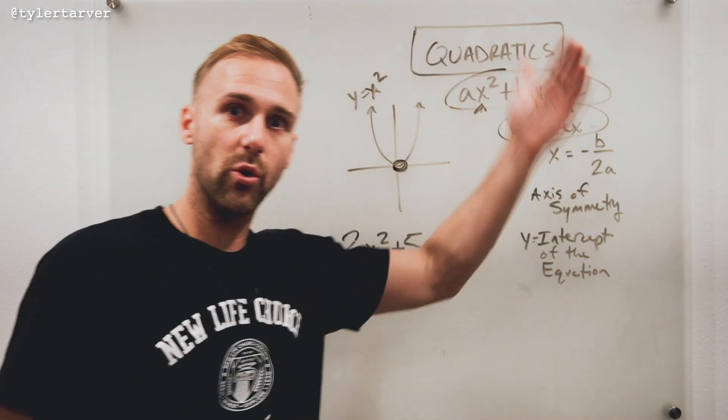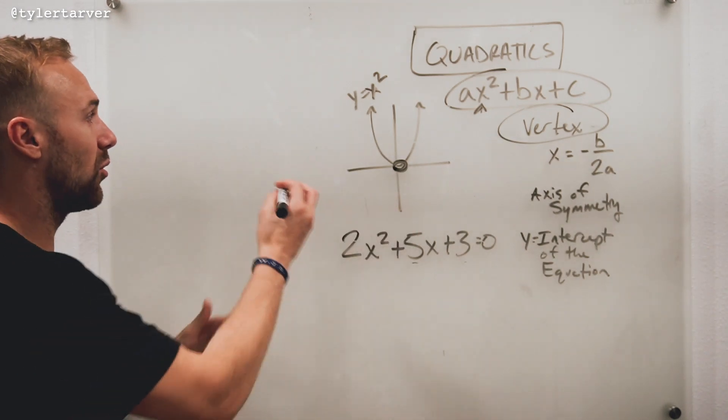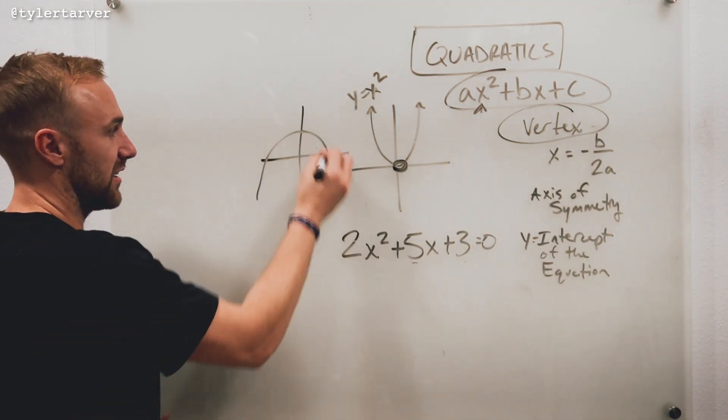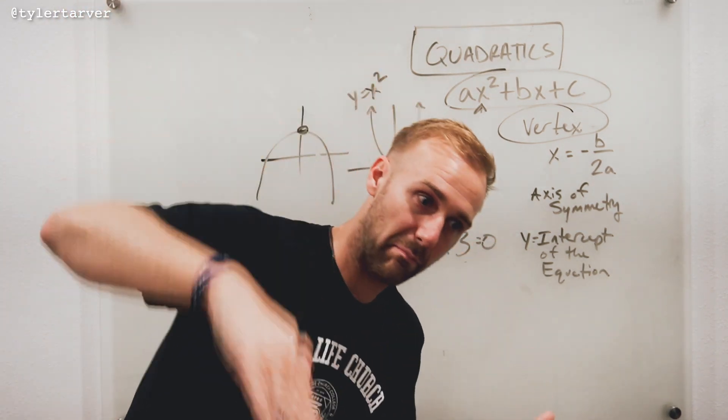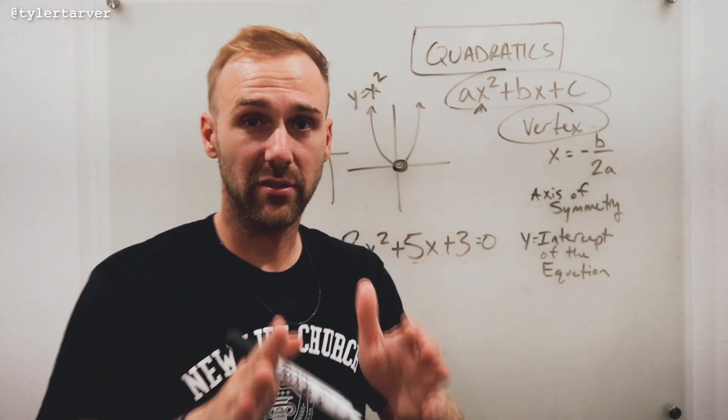That is where the lowest part of the quadratic is. Or if it's like this, then it's the highest part. Okay? Your vertex is like the tip of the mountain or like the bottom of the valley. All right? That's what the vertex is.